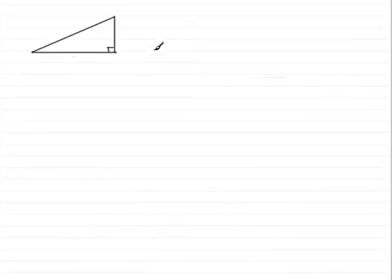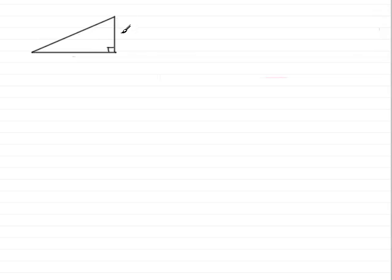Welcome to this tutorial on Pythagoras' Theorem. Pythagoras discovered a rule connecting the three lengths of a right-angled triangle. This rule allows you to calculate one of the sides, providing you know the other two sides.